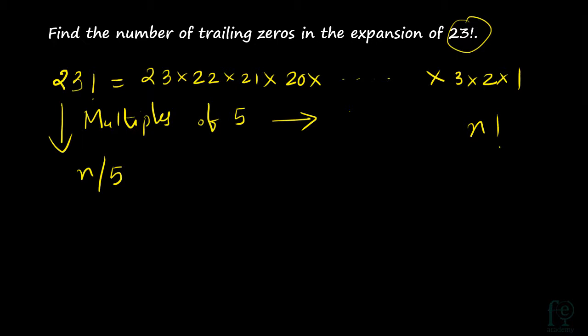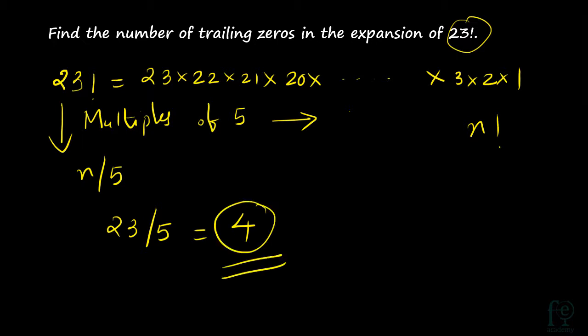You will understand it clearly as we go through more questions. So here you have to do 23 divided by 5. The answer is 4 — you find only the whole number, no need to consider decimal places. You are getting a number less than 5, so you can stop there. Suppose if you had got 8, you would have to again divide 8 by 5. But here you got a number less than 5, so you stop. Your answer is 4 — there will be 4 trailing zeros in 23 factorial.